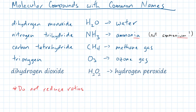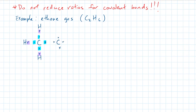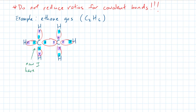One last thing: do not reduce the ratios for covalent bonds. Here is an example of why not. The chemical formula for ethane is C2H6. The first carbon will share three of its electrons with three hydrogens surrounding it, and will share one electron with the carbon to its right. The carbon on the right also shares three of its electrons with three other hydrogens surrounding it. The carbons in the middle each have four valence electrons of their own, and will borrow four more from their surrounding friends to become stable. Hydrogen only needs two electrons to become chemically stable, so each hydrogen will borrow one electron from the carbons in the middle. So, ethane is chemically stable when it has two carbons and six hydrogens.